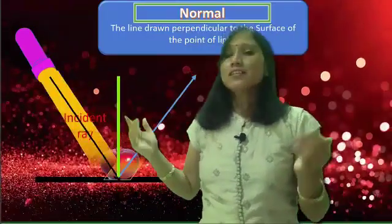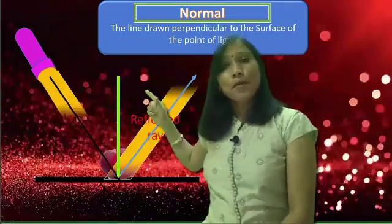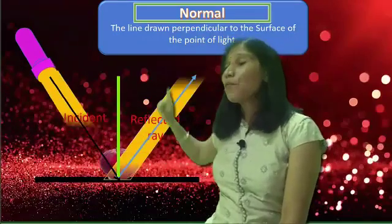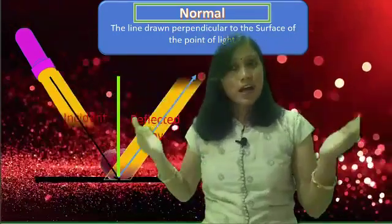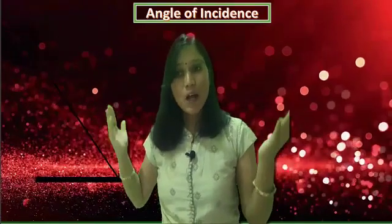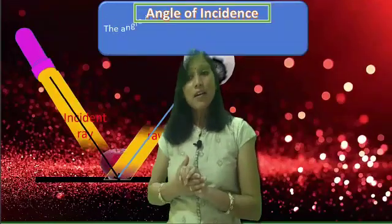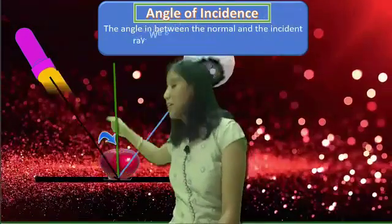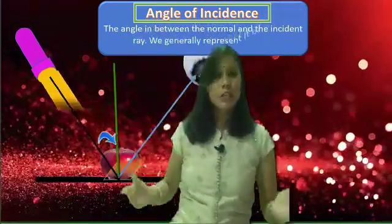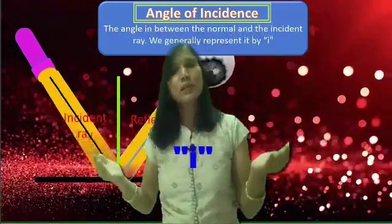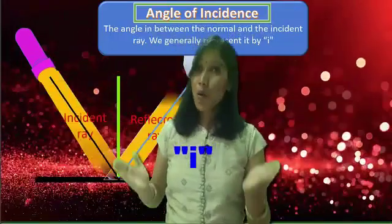The next point is normal. The line drawn perpendicular to the surface at the point of incidence is known as the normal. Next point is angle of incidence. The angle between the normal and the incident ray is known as the angle of incidence. We generally represent it by small i.